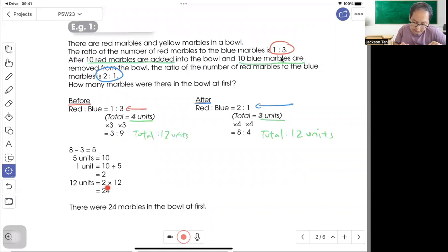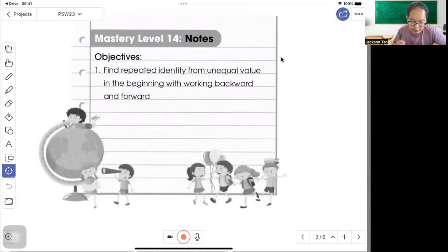At first 3 plus 9, so 12 units. There were 24 marbles in the bowl at first.